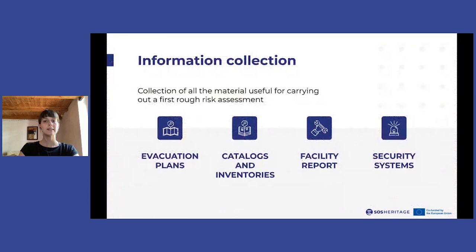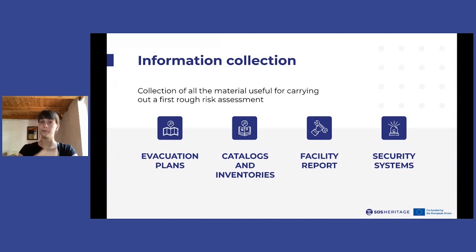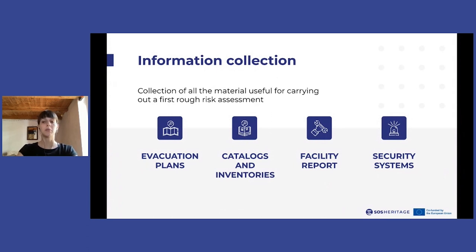The documents that may be useful for the project include, first of all, the health and safety plans. These documents already contain most of the basic information for the reaction and response procedures in case of emergency and can be used as an outline for identifying tasks and responsibilities. Thanks to the safety plans, which are by law mandatory, it is possible to have a first analysis of emergency reactions through the indication of emergency exits, placement of fire extinguishers, meeting places in case of emergencies, and so on.